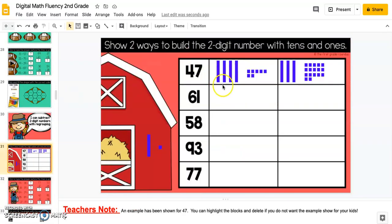This one they are showing more than one way to build the two-digit number, so this one's working on regrouping. Here's 47, the example that's shown. If you don't want the example to show, you can click and drag and just delete it.